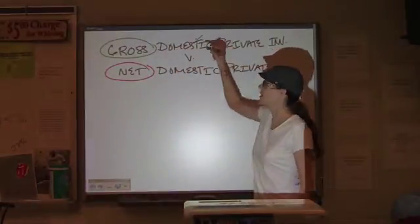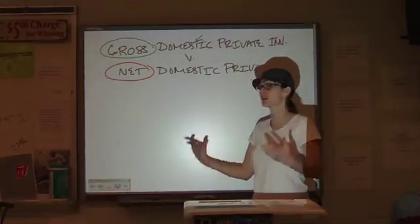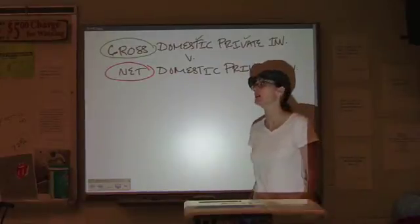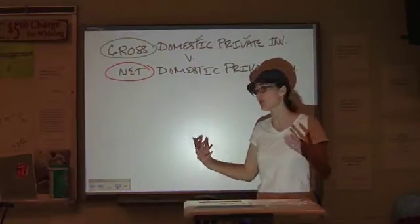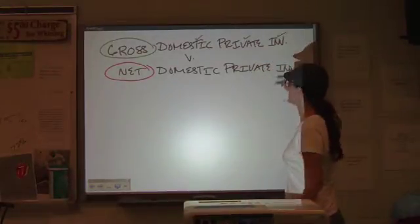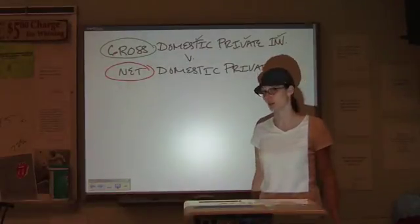Domestic means we're talking about within the United States, that's why we're using this to calculate gross domestic product. Private, meaning that it's individuals and not government, because if the government is spending money, that goes into a different calculation. And with investment, we're usually talking about spending by businesses on capital equipment.